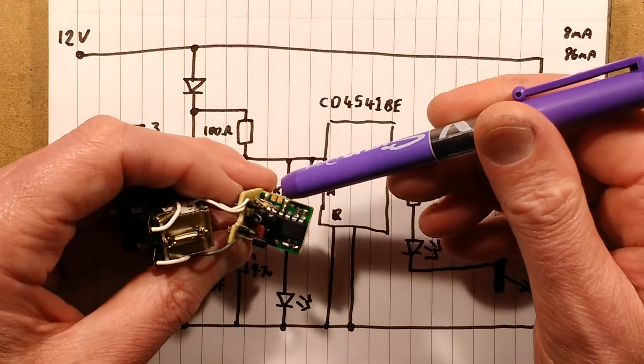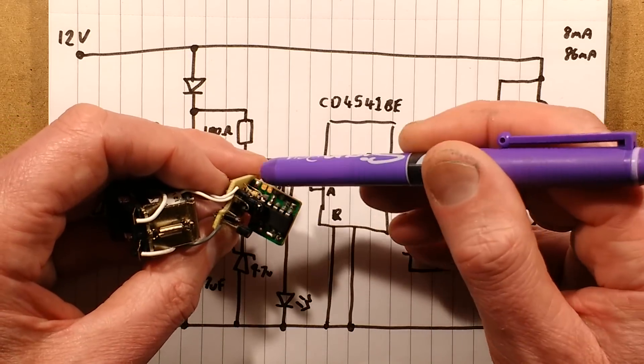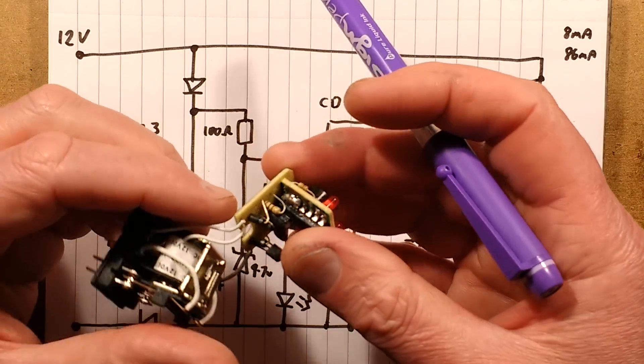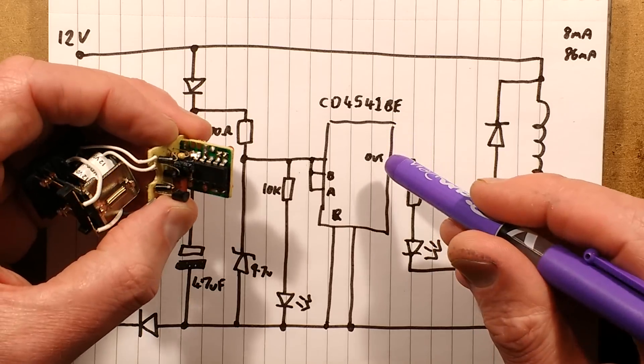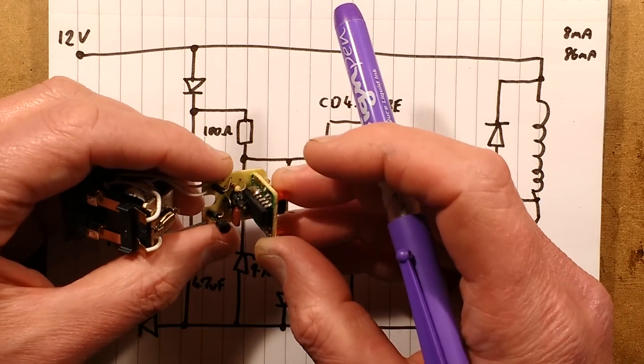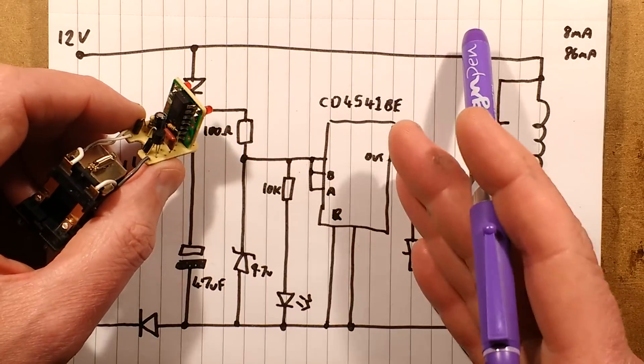There are solder pads on here that look as though they're designed to be bridged or little links put in to change the range. But I'm wondering if they actually just, I suppose, ultimately, they may just use the same circuit board for a wide series of ranges. The only thing they'd really need to change is the timing capacitor to change the whole scale of the range.